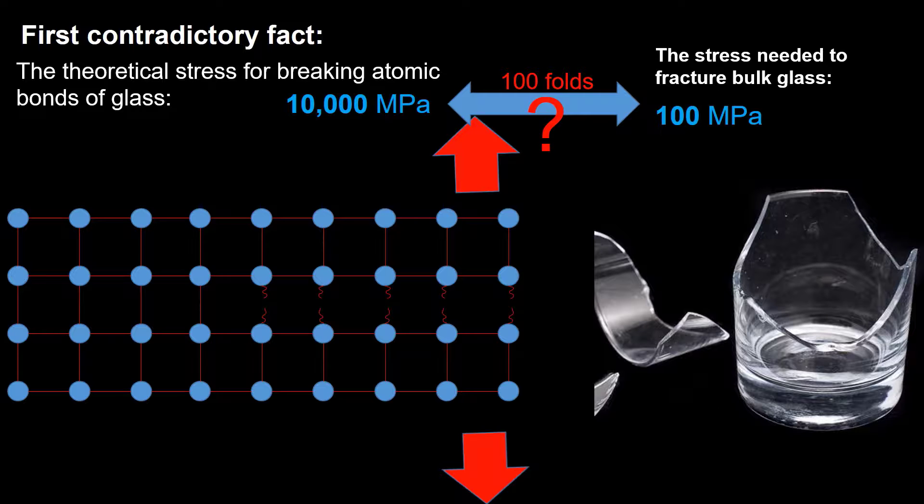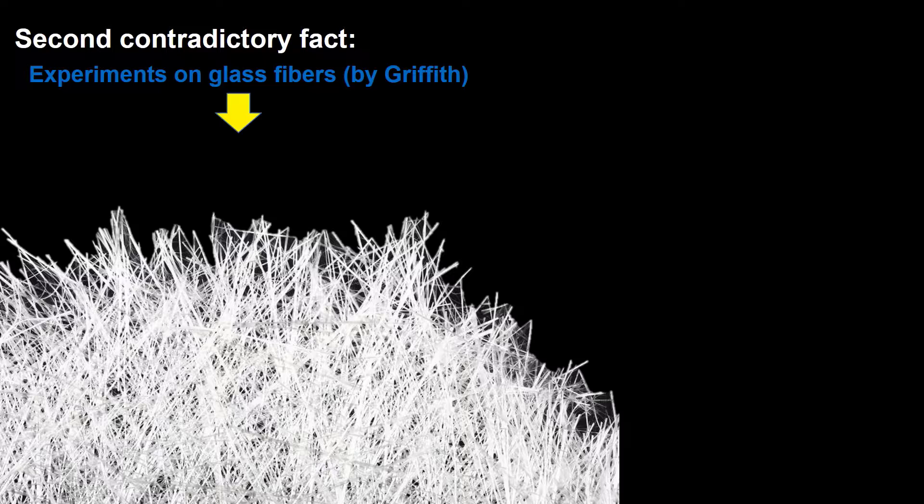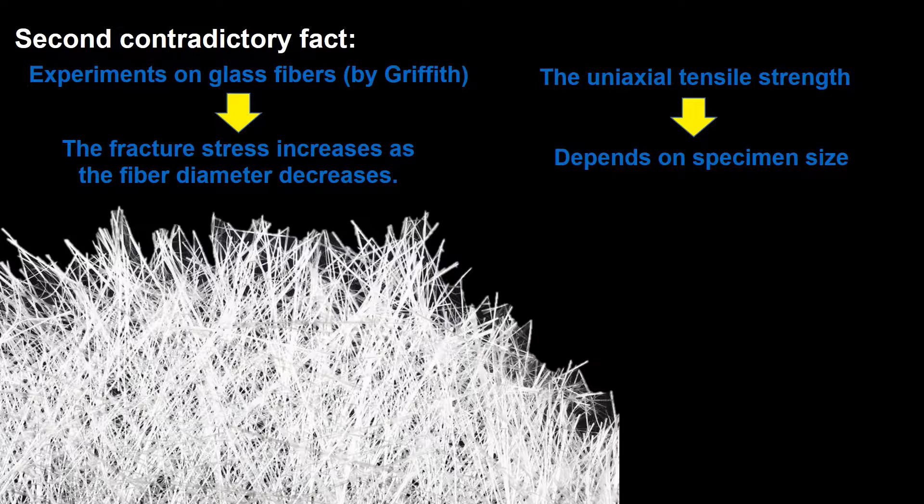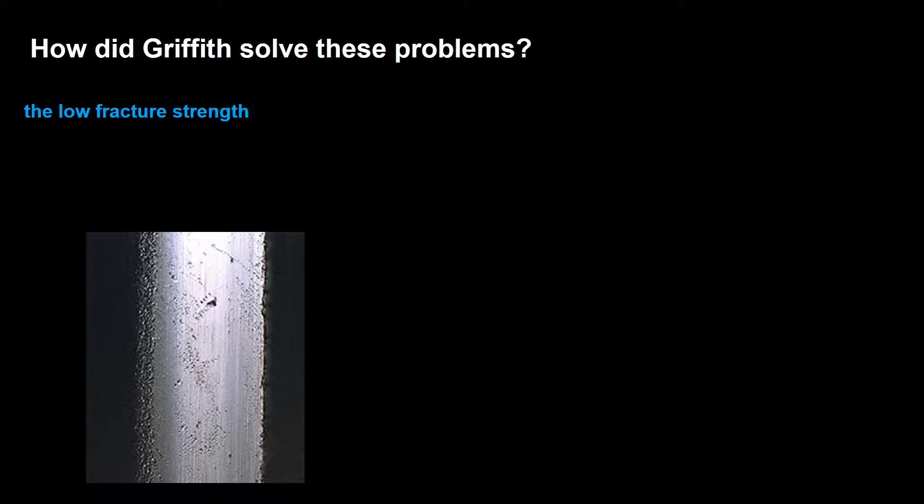What is the fact behind it? The second contradictory fact was related to strength of glass fibers with various dimensions. Experiments on glass fibers that Griffith himself conducted showed that the fracture stress increases as the fiber diameter decreases. Hence, the uniaxial tensile strength depends on specimen size. But uniaxial tensile strength is used extensively to predict material failure. How is it possible that it varies by specimen size?